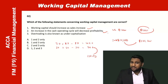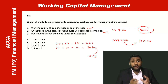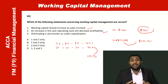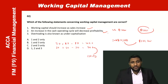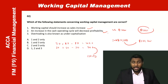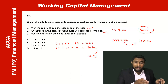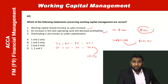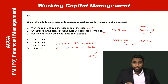The third statement — overtrading is also known as undercapitalization — is correct. Overtrading means you haven't invested enough in working capital; that is undercapitalization. Overcapitalization is the opposite: you've invested more than needed. For example, if you keep $100,000 as working capital but only $50,000 is efficient, the excess $50,000 could be deposited in a bank earning interest. Keeping too much in working capital sacrifices profitability.